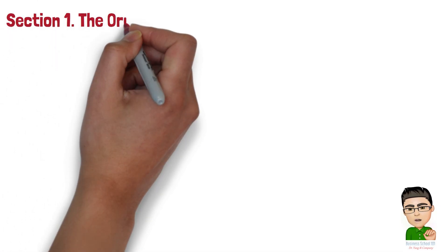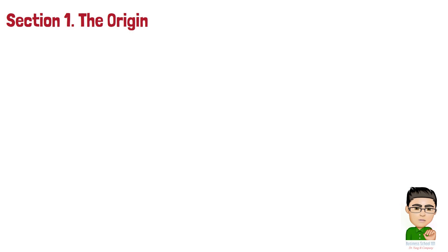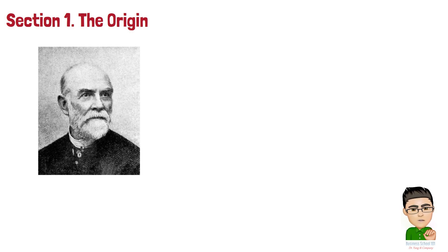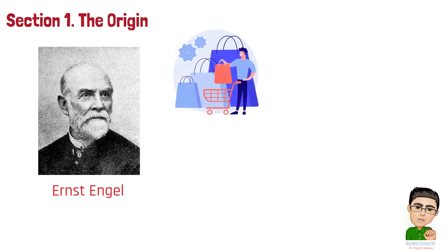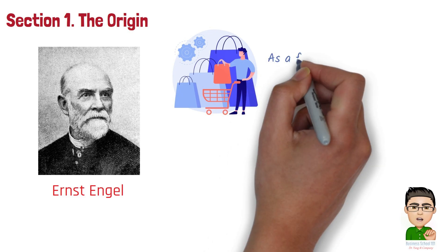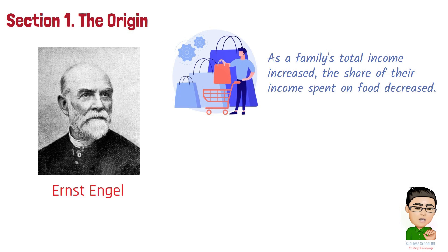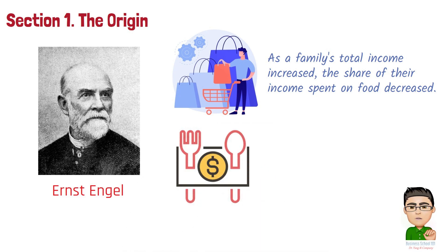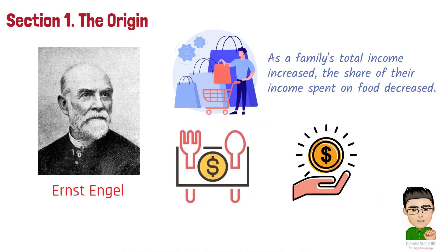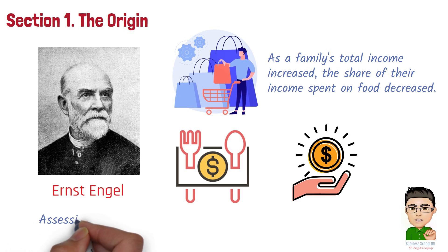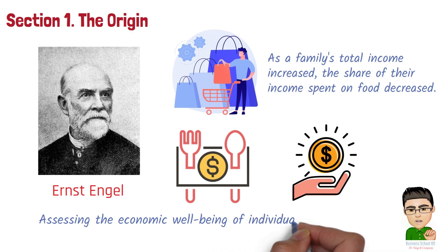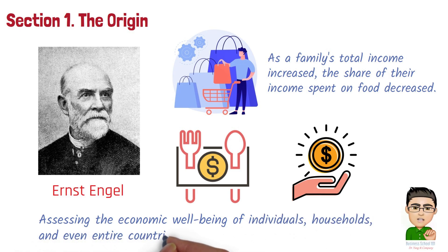Section 1: The Origin. The Engel Coefficient is a concept developed by 19th century German statistician and economist Ernst Engel. It is based on his study of consumption patterns in families with different income levels in Belgium. Engel discovered that as a family's total income increased, the share of their income spent on food decreased. This inverse correlation between food expenditure and income is the foundation of the Engel Coefficient, which has become an important tool in both economics and sociology for assessing the economic well-being of individuals, households, and even entire countries.